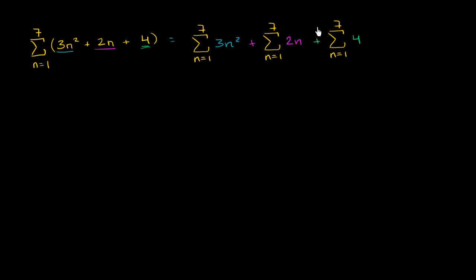Now out of all of these, this last piece is pretty easy to evaluate. When n equals 1, this thing is equal to 4. When n equals 2, this thing is equal to 4. When n equals 3, this thing is equal to 4. So you're essentially going to take 7 fours and add them together. So this is essentially just going to evaluate to 7 times 4, or 28.